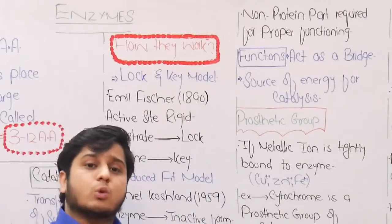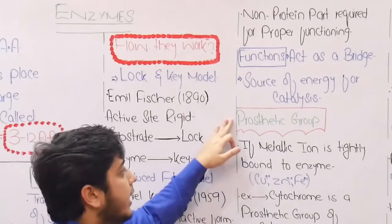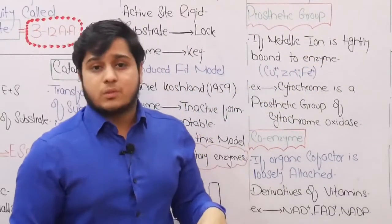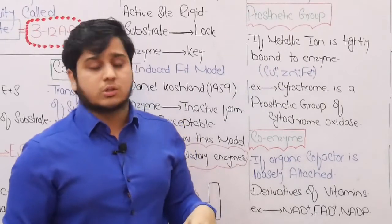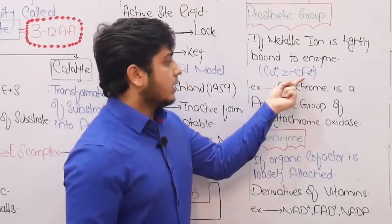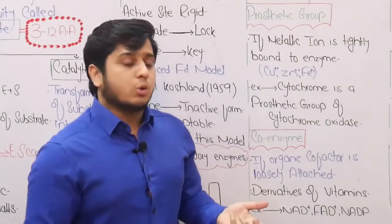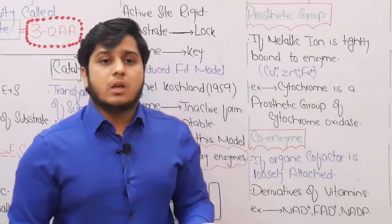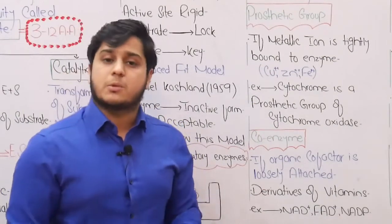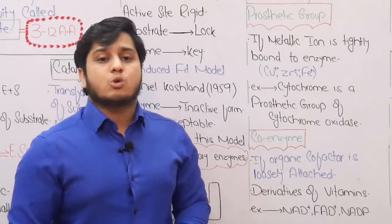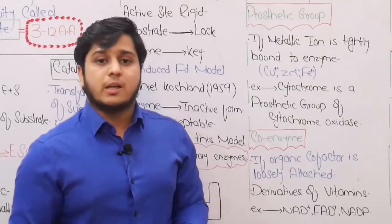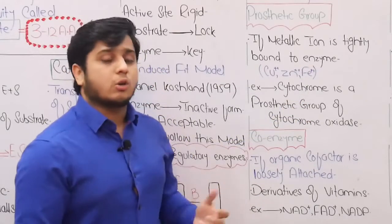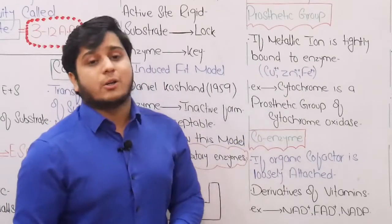Cofactors are of two categories: they may be a prosthetic group or a coenzyme. If a metallic ion is tightly bound to the enzyme, it is known as a prosthetic group. Examples of prosthetic group metals are copper, zinc, and iron. Non-metals can also be prosthetic groups — for example, salivary amylase requires chloride ion for its activation. For example, cytochrome is the prosthetic group of cytochrome oxidase.